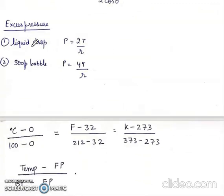Excess pressure inside liquid drop is 2 T by R. And excess pressure inside soap bubble is 4 T by R.